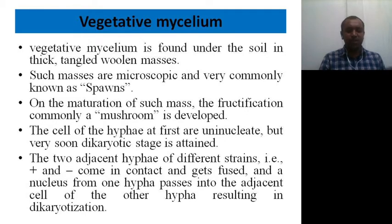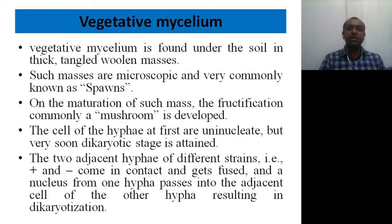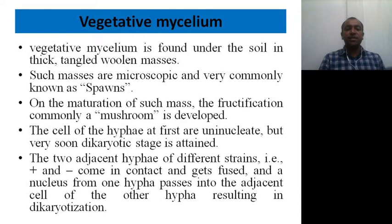On maturation of such masses, the fructification called the mushroom is developed. Fructifications are those fungal structures on which the spores are borne. In this case we will see the basidiospores. The cells of the hyphae are uninucleate at first but very soon reach the dikaryotic stage.